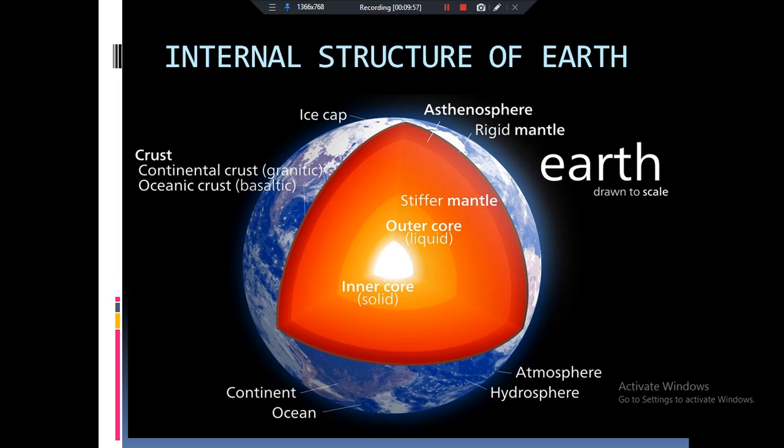Can you see this? The inner part is the core, then is the mantle and the outer most surface is the crust on which we are living, on which the agricultural activities are being carried out. And on the sides of it, it is the atmosphere which is protecting us from the harmful radiations of the sun.